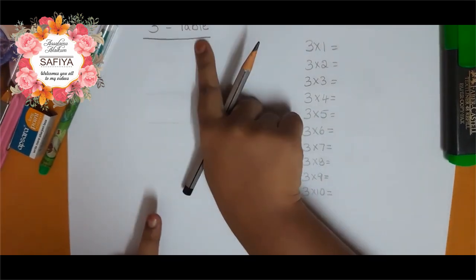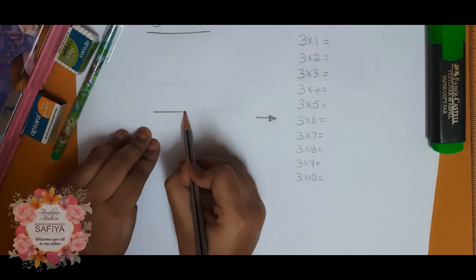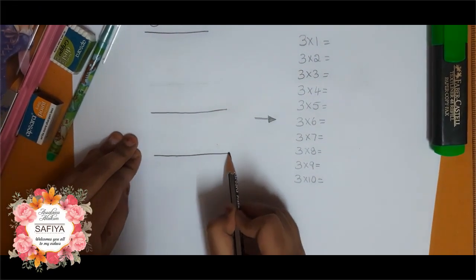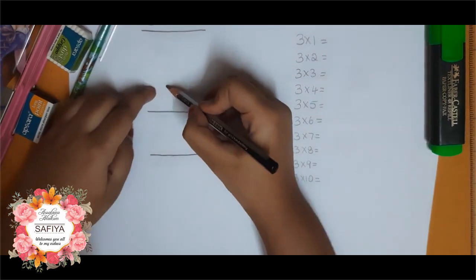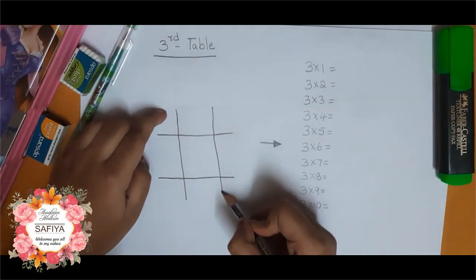Now start third table. First horizontal line. Once again horizontal line. Vertical line. Once again vertical line.